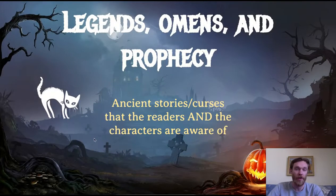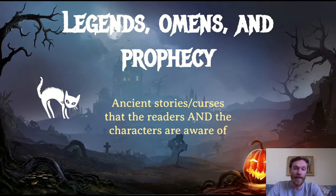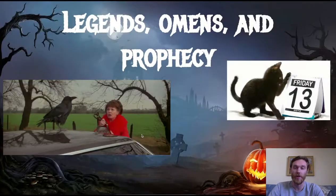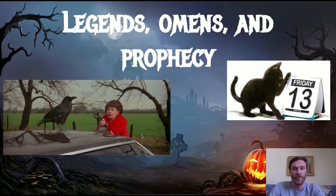Next is legends, omens, and prophecy. Anytime you see ancient stories or curses that readers and characters are aware of, jot those down. The first story we read is the Legend of Sleepy Hollow — it kind of gives it away in the title. Note that it has to be something both the reader and character are aware of. Think about a black cat being bad luck, a raven being a bad omen, or Friday the 13th — those are examples of legends, omens, and prophecy.